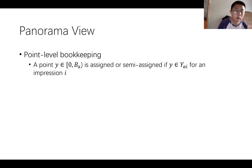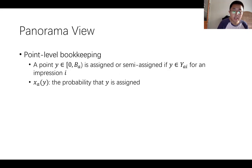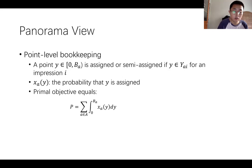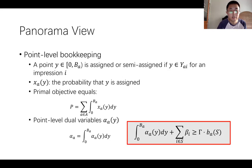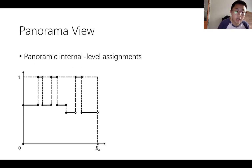Concretely, if we use P to represent the objective achieved by the algorithm and D to represent the upper bound of the offline optimal, then an online algorithm is gamma-competitive if the reverse weak duality holds, as well as the approximate dual feasibility is satisfied. In the panorama view, we perform a point-level bookkeeping. A point y is assigned or semi-assigned if there is an impression i assigned or semi-assigned to A, and the subset combination Y_AI contains y in a deterministic or randomized round respectively.